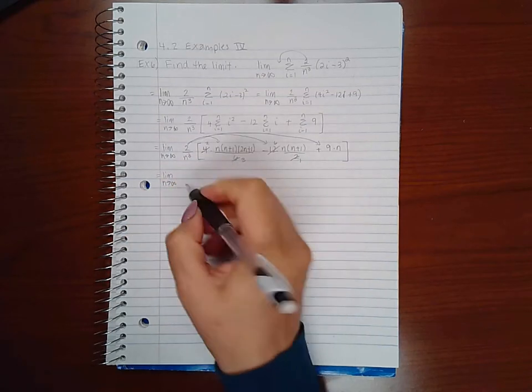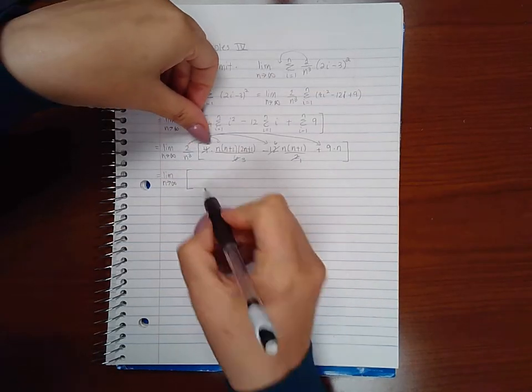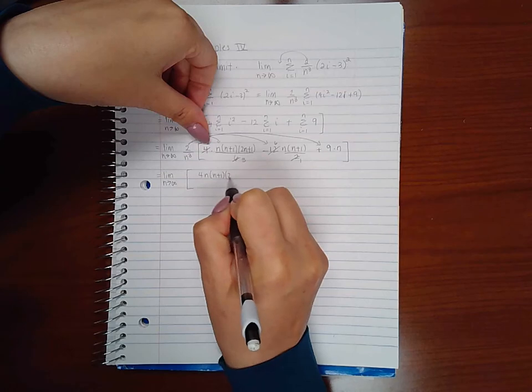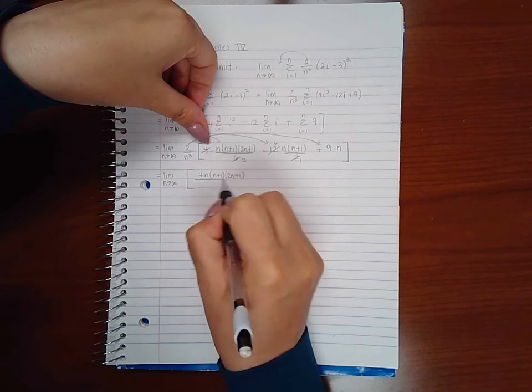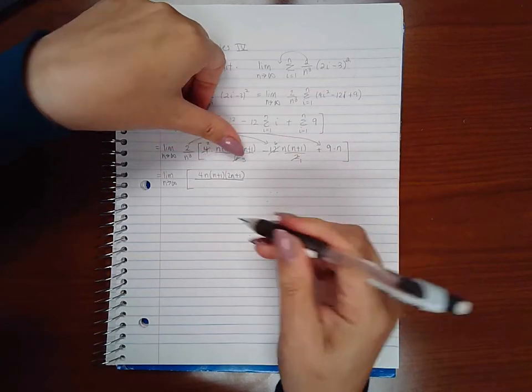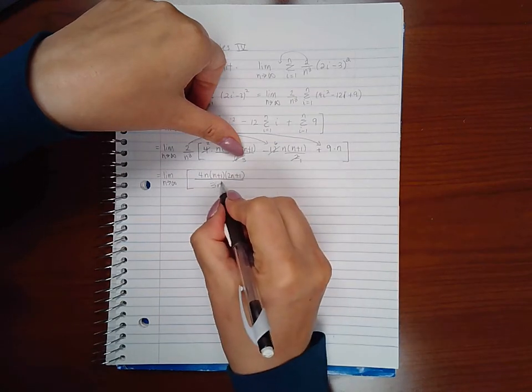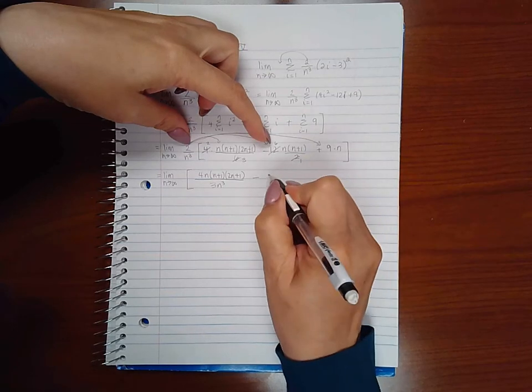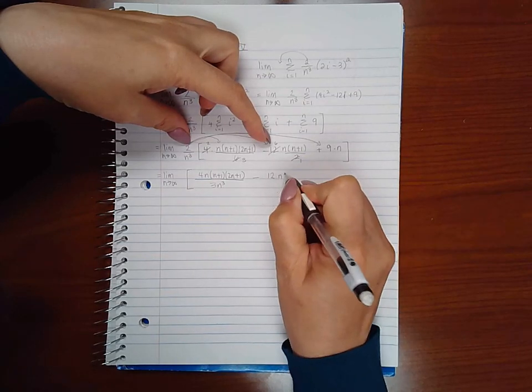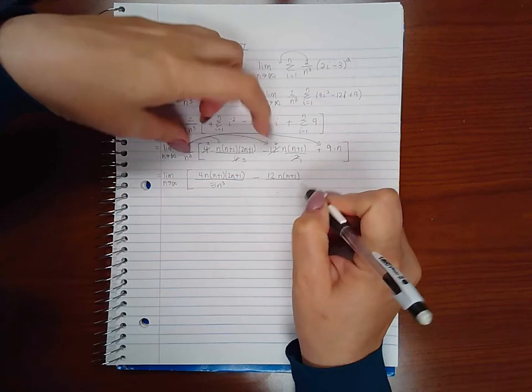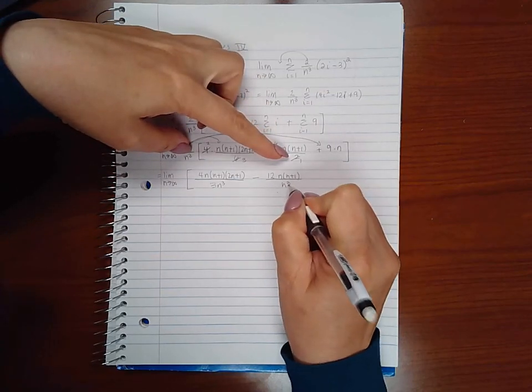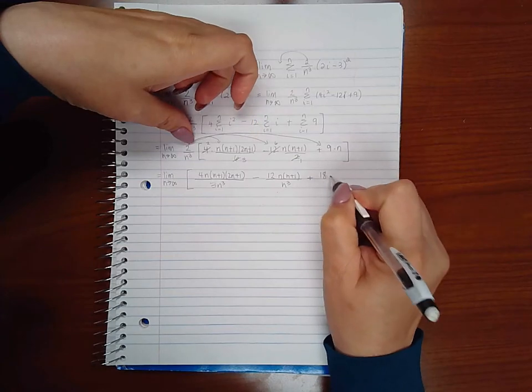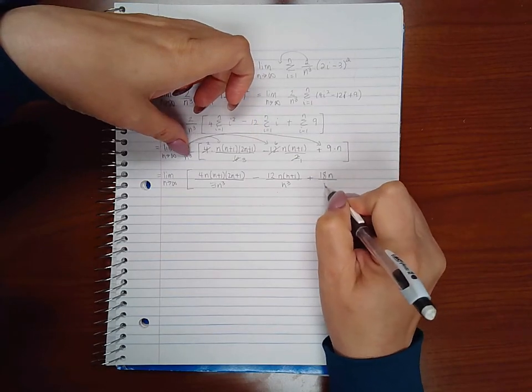Just to prevent so much writing. So I'm going to get 2 times 2 which is 4, and then I'm going to end up with n cubed times 3, minus 2 times 6 is 12 over n cubed times 1 is n cubed, and then 2 times 9 is 18 over n cubed.